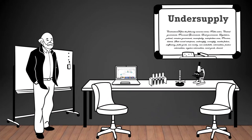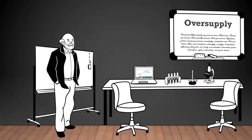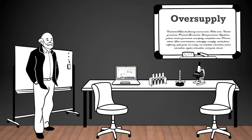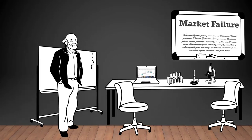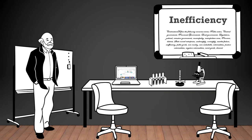Under-supply: a situation where the quantity of a good or service provided in the market is insufficient to meet the demand. Oversupply: a situation where the quantity of a good or service supplied in the market exceeds the demand. Market failure: the inability of the market to allocate resources efficiently, leading to suboptimal outcomes and the need for government intervention. Inefficiency: a state where resources are not utilized optimally, leading to waste and reduced productivity.